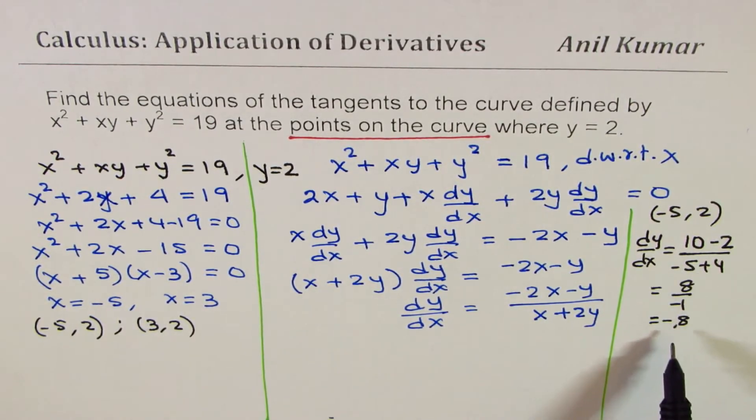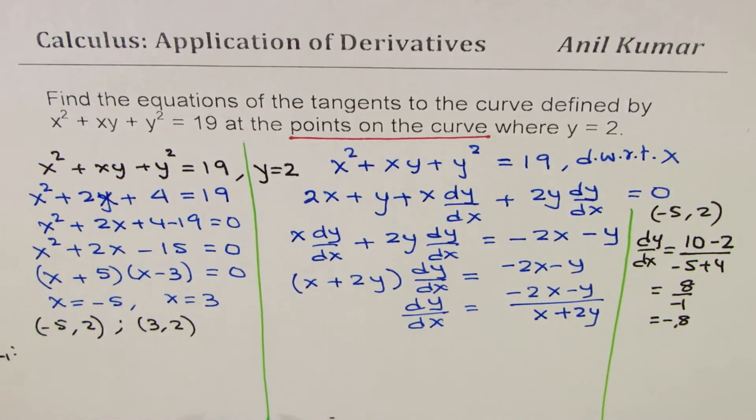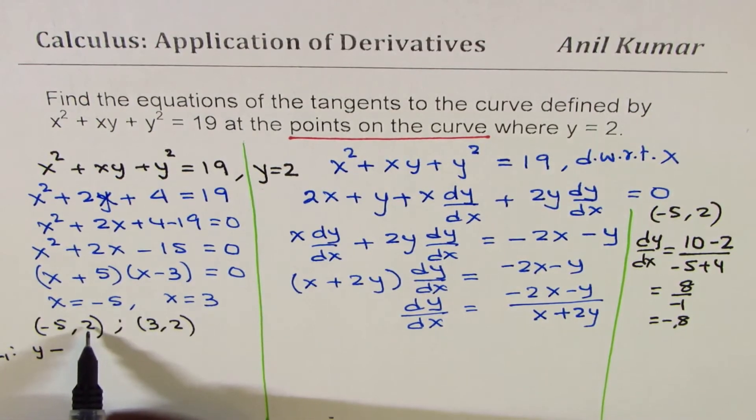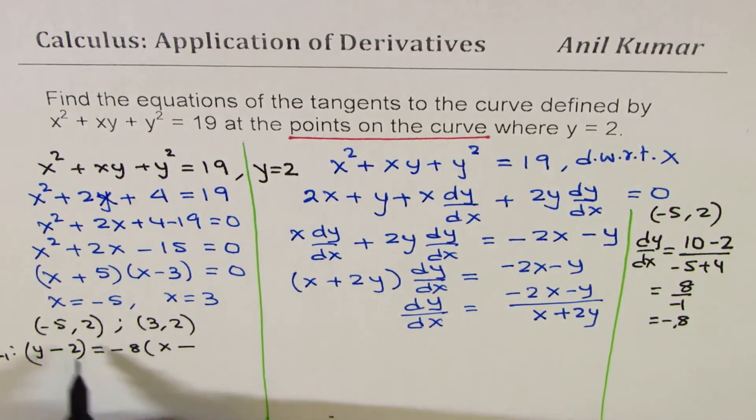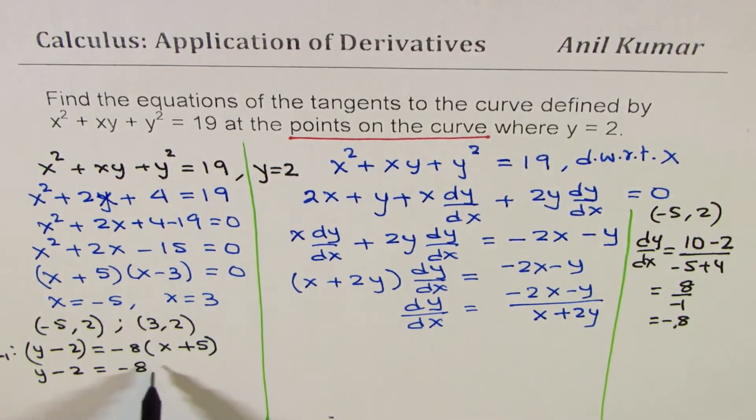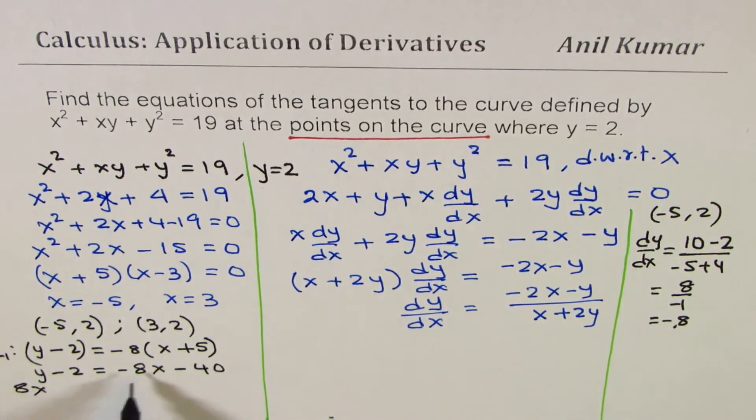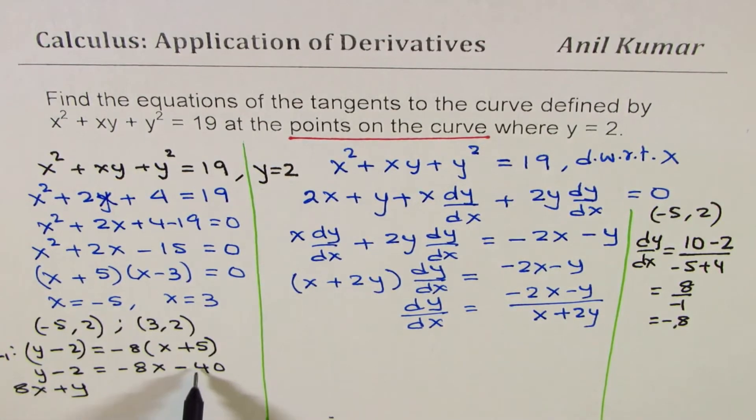Now, let's find equation of this line. So, line 1 is slope of -8, point is (-5, 2). So, we can write this as y - 2 = -8(x - (-5)), which is +5. So, let's open this bracket. So, we get y - 2 = -8x - 40. So, we bring the terms together. So, we have 8x + y + 38 = 0. So, that becomes our first equation.